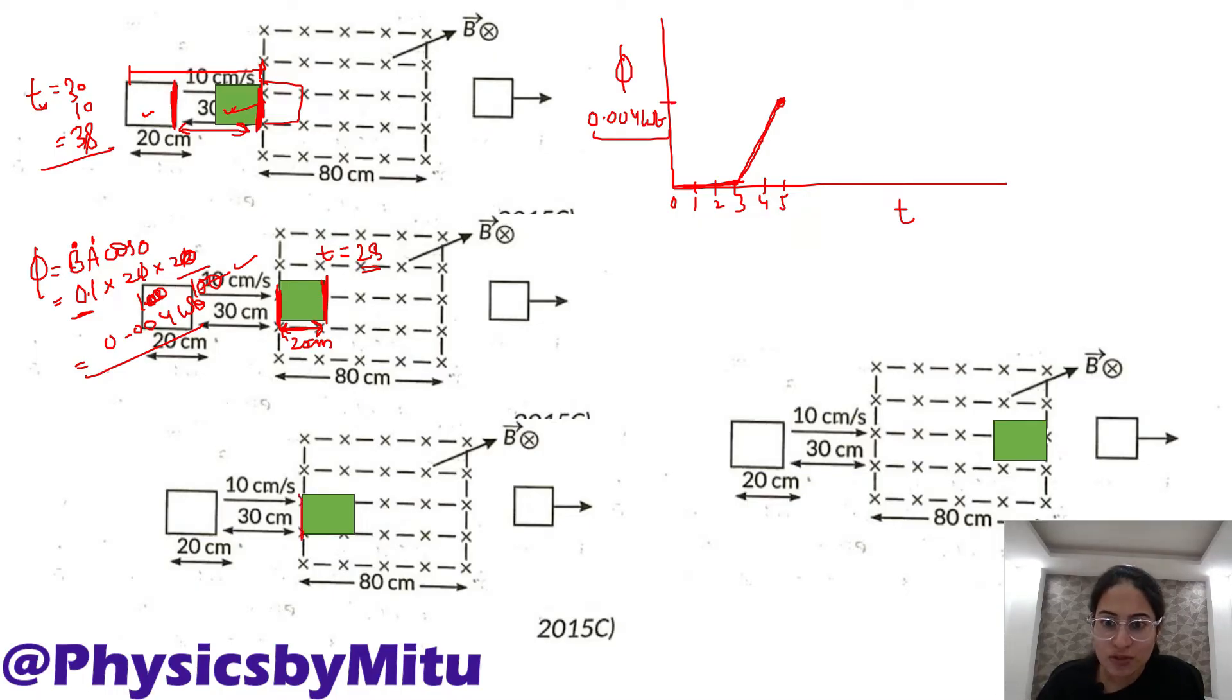Now from this position to this position, is there any change in flux? No, because B hai, A uniform region hai. Number of lines passing through the coil will not change, so flux will remain same. Kitne time ke liye? This side covers how much distance to reach this position? This distance is 80. 80 minus 20, 60 cm. Time is 60 upon 10, 6 seconds.